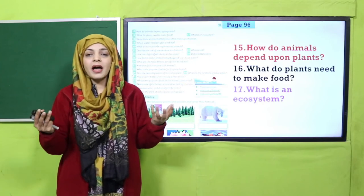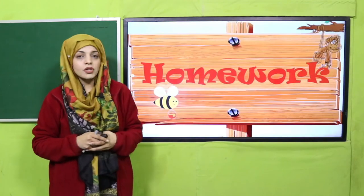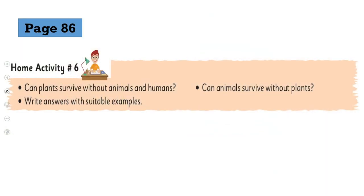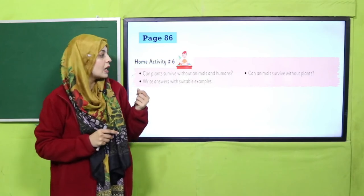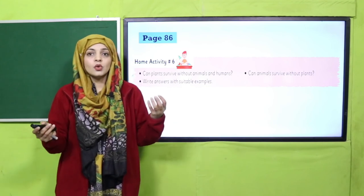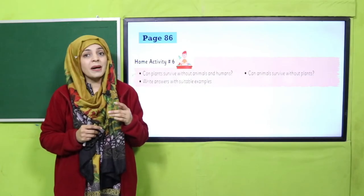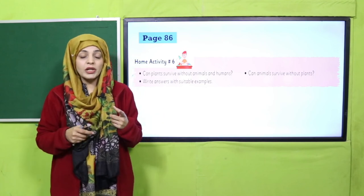What is an ecosystem? The interaction among the inhabitants of a habitat is called an ecosystem. Now for homework on page number 86, home activity number 6: Can plants survive without animals and humans? Can animals survive without plants? Write your answer with suitable examples — yes or no — and support your answer with examples.